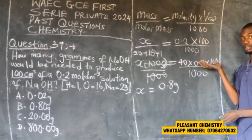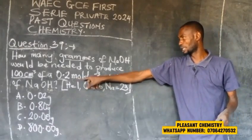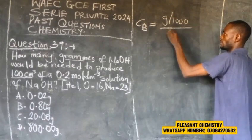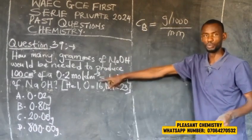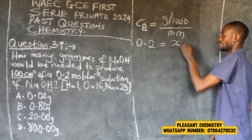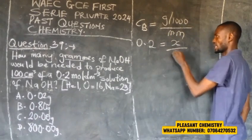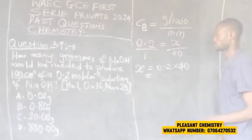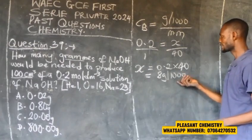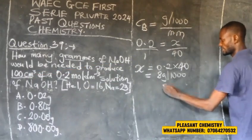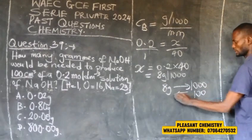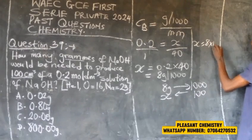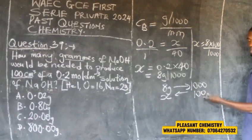Alternatively, using the formula: molarity equals grams in 1000 cm³ divided by molar mass. So 0.2 = X divided by 40, giving X = 8 grams per 1000 cm³. Since we only need 100 cm³, we calculate: 8 multiplied by 100 divided by 1000 = 0.8 grams. Both methods confirm the answer is 0.8 grams.